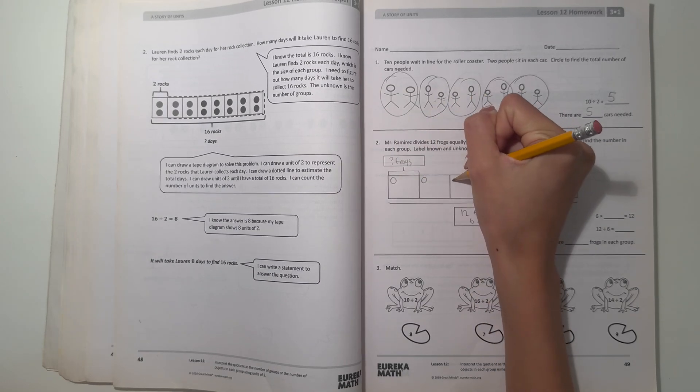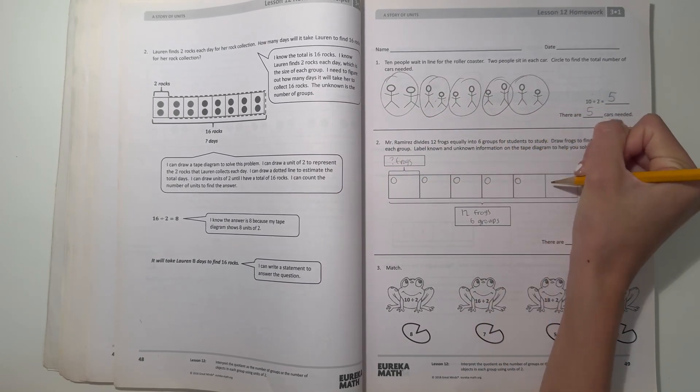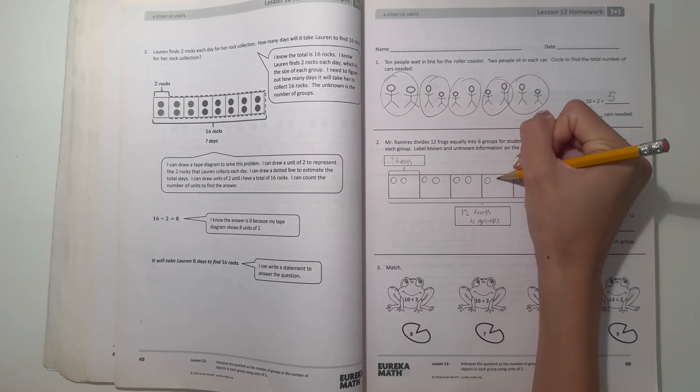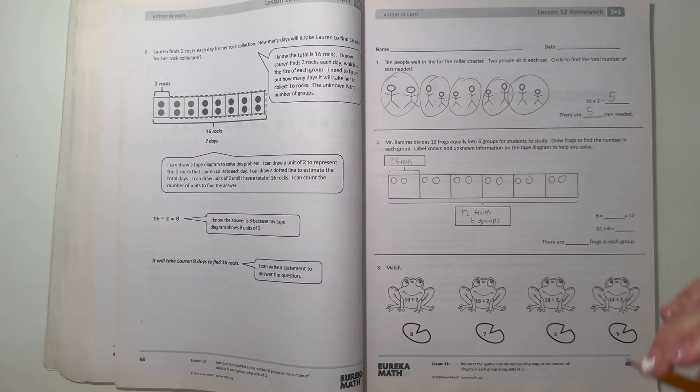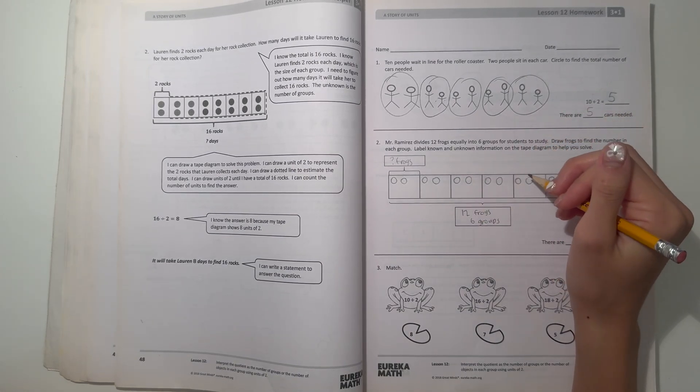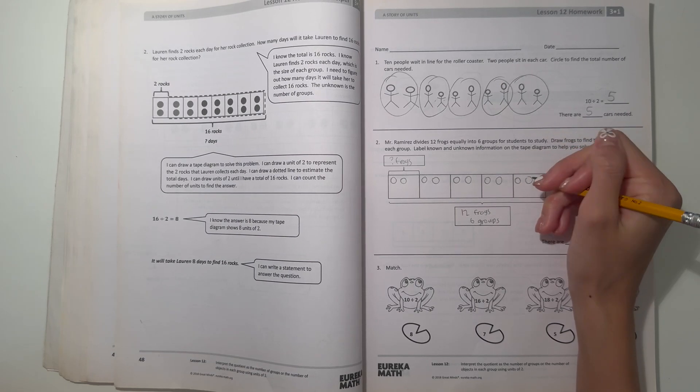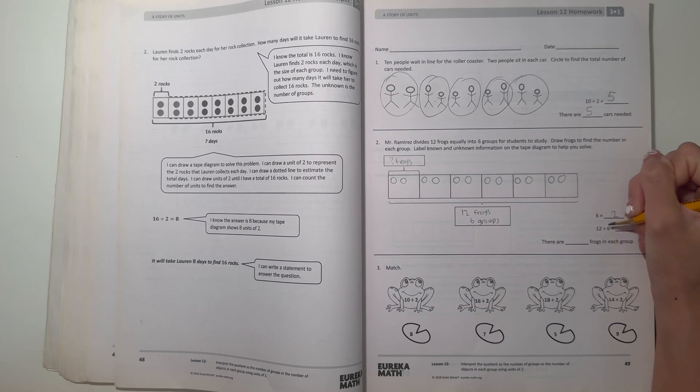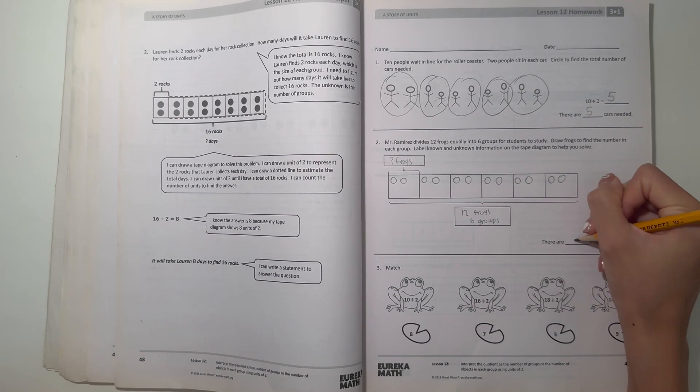So 1, 2, 3, 4, 5, 6, 7, 8, 9, 10, 11, 12. Alright, so we did 6 groups and 12 frogs. So that gives us 2 in each group. So that means 6 times 2 is 12, and 12 divided by 6 is 2, which means there are 2 frogs in each group.